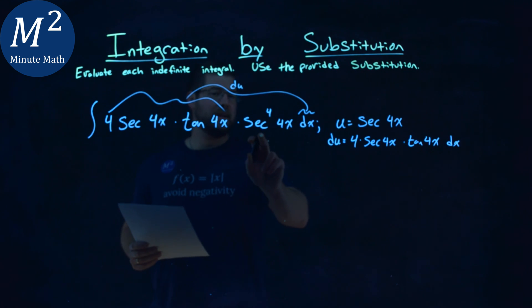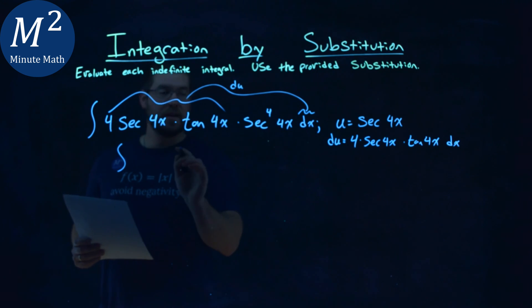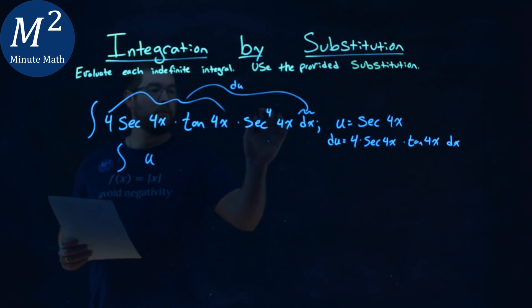Our u is just secant of 4x. So this whole thing writes down to something fairly simple. The secant of 4x is the u value, so we have u to the 4th power.